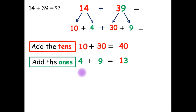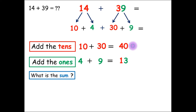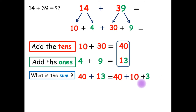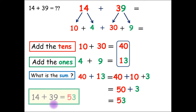And finally, we will add the results. The results are 40 and 13. In the number 13, we have 1 ten and 3 ones. So, we can write 40 plus 13 as 40 plus 10 plus 3. So, 40 plus 10 equals 50, plus 3 equals 53. So, 14 plus 39 equals 53.